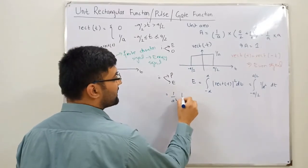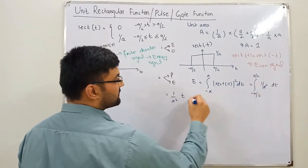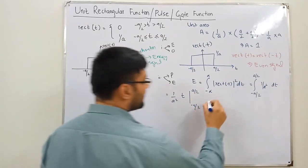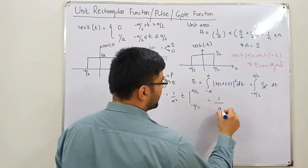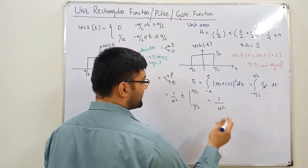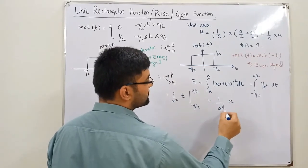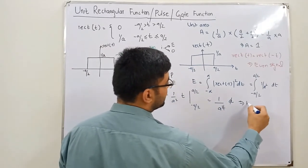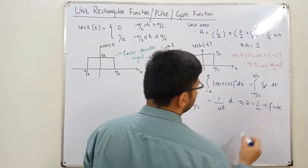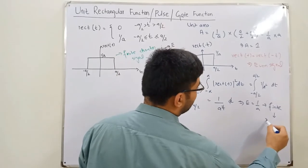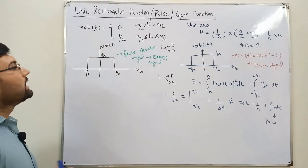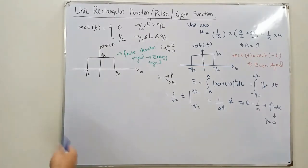This is with respect to t, so this is constant. This would come outside of the limit. You have 1 over a squared. You have t is the integration of 1, and the limits are a by 2 and negative a by 2. So you have 1 over a squared, then a by 2 plus a by 2 is then a. So a squared would cancel out with a. This means that the energy is 1 over a. The energy is finite. If the energy is finite, this means the power would be 0. If the energy is finite, the signal is an energy signal.